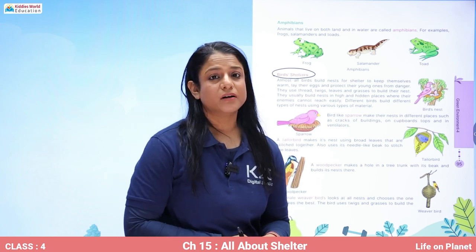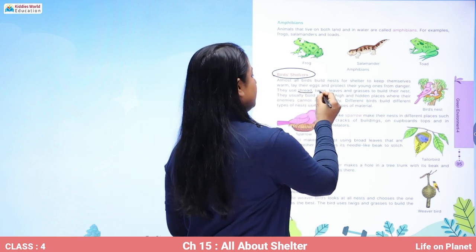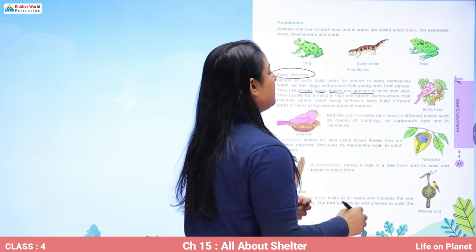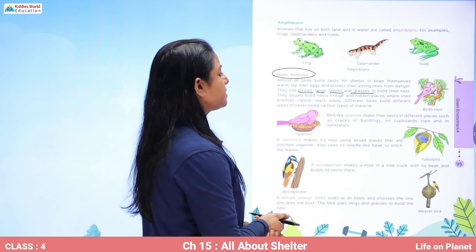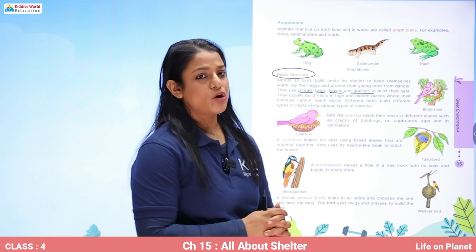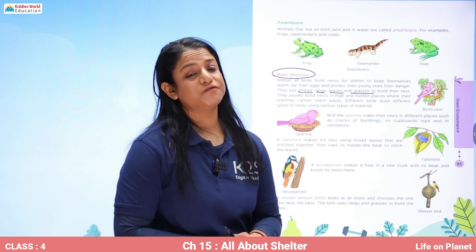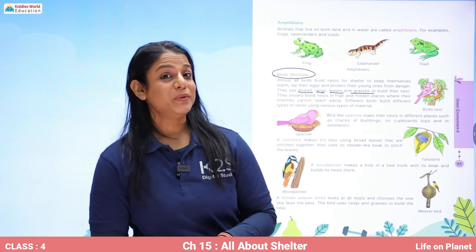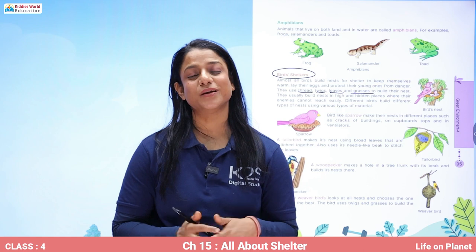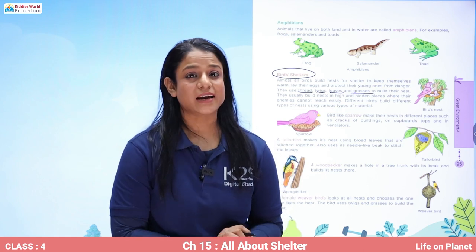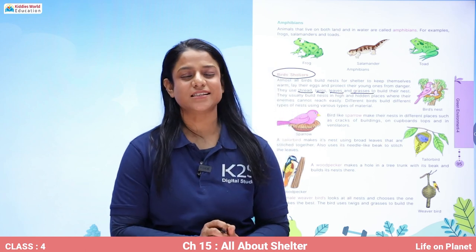Birds use thread, twigs, leaves, and grasses to build their nests. They usually build nests in high and hidden places where their enemies cannot reach easily. Different birds build different types of nests using different materials. Birds are very smart — they know what kind of beak and claws they have, and according to that they collect different materials and build their nest.